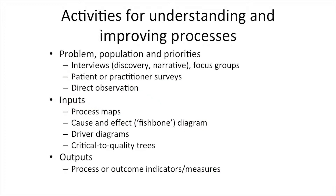Various activities can help us understand the elements involved, and this can be used to improve them. The problem, population of interest, and priorities for improvement can be elucidated using interviews or surveys of patients and staff, or direct observation of processes. The series of steps in a process of care or patient journey can be shown pictorially using a process map, constructed by writing down the steps on post-it notes and connecting these on a large piece of paper using arrows, best done with the team involved. Constructing the process map leads to analysing and improving it by removing redundant, unhelpful, or duplicating steps — all of which waste time and resources. The process map can also help us identify which steps are critical to quality, and these can be summarised using a critical to quality tree.